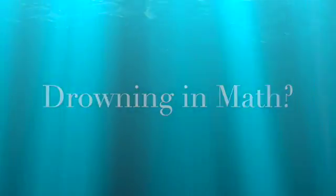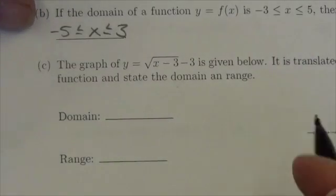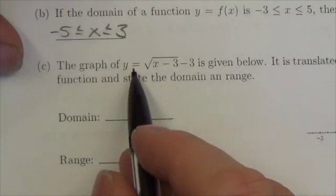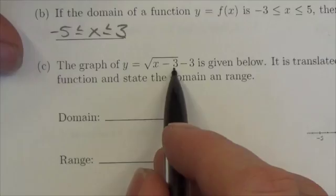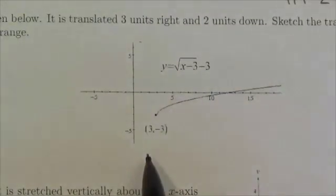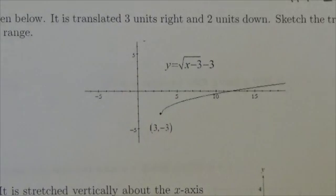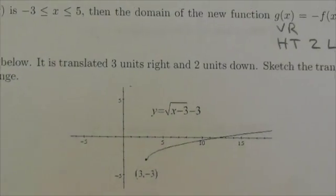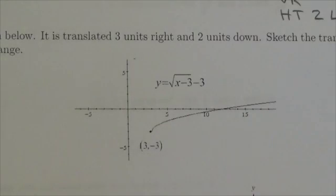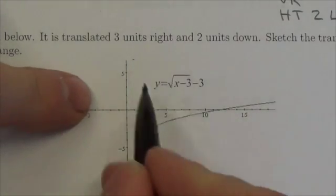Hi everybody. This question says that the graph of y = √(x-3) - 3 is given below. This is a kind of question you need to be prepared for: we're starting with a function that is already a transformation of a base function.